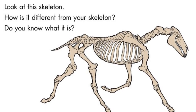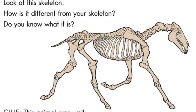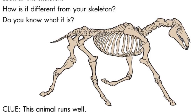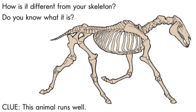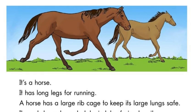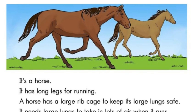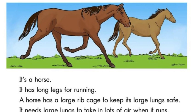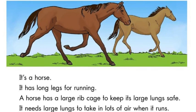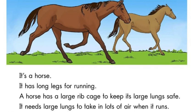Look at this skeleton. How is it different from your skeleton? Do you know what it is? Clue: this animal runs well. It is a horse. It has long legs for running. A horse has a large rib cage to keep its large lungs safe. It needs large lungs to take in lots of air when it runs.